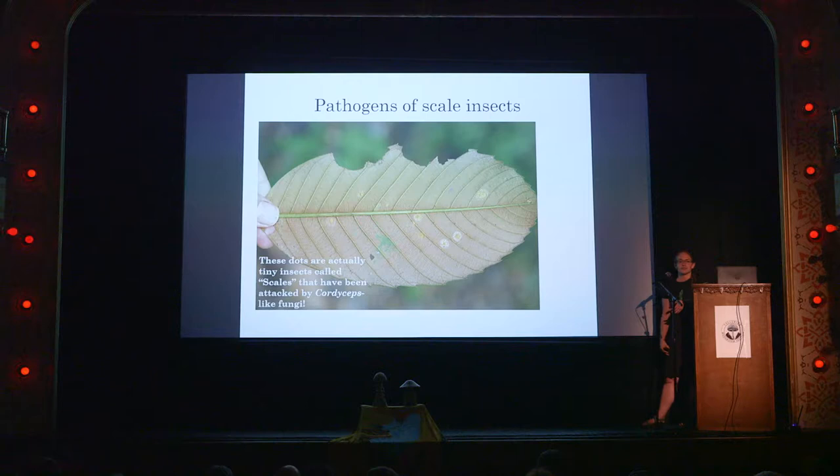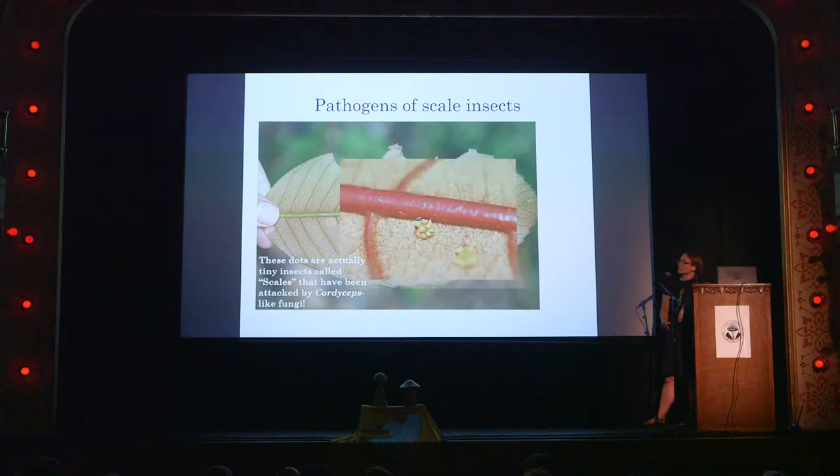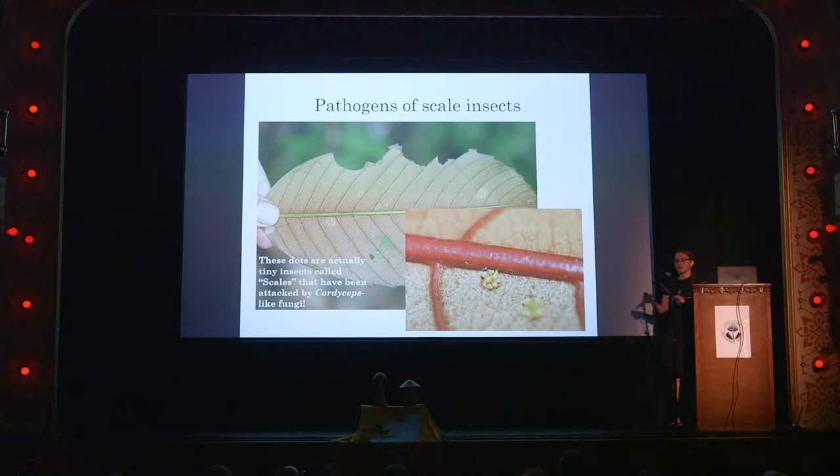There are also pathogens of scale insects. If you're turning over a leaf in the tropics or in Appalachia and happen to see little yellow dots, you might think it's a plant pathogen, but in fact these are tiny scale insects living on the undersides of leaves — and then they get hit by cordyceps. Zooming in, these are little perithecia. This was collected in the field with the cross vein still green, and back in the lab the vein has changed color. These are the perithecia growing on those tiny little scale insects.